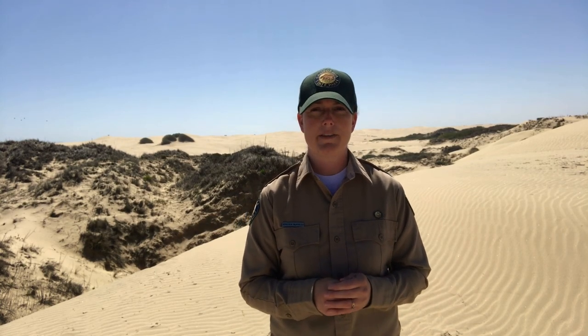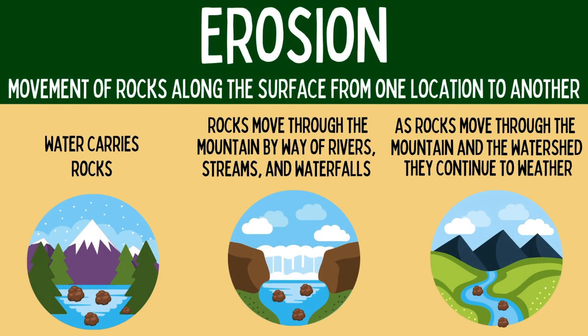This coastal sand dune habitat did not form overnight — it actually took quite a bit of time and can be measured on geological time scales. Let's take a step back to look more closely at the weathering process. Weathering occurs when cracks of large rocks and boulders collect water from rain or melting snow. Over time, water expands inside the rock and as expansion increases, the boulder breaks apart into smaller rocks. Eventually the force of water carries these rocks through erosion. Rocks move throughout the mountain by way of rivers, streams, and waterfalls, continuing to weather into tinier and tinier pieces until eventually becoming grains of sand that make their way to the ocean.